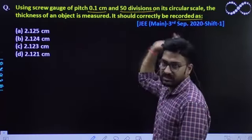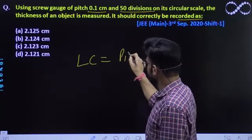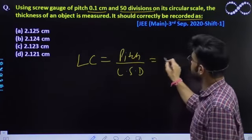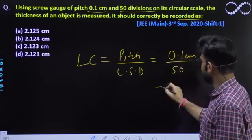So, sabse pehle, jab pitch given hai, circular scale division given hai, toh kya nikal sakti ho aap, least count. Least count kitna hota hai? Pitch by circular scale division. Toh pitch kitna hai? 0.1 centimeter. Divided by 50 kar denge hum.